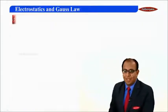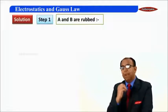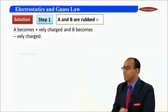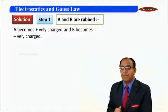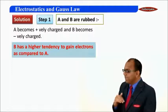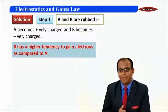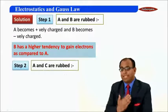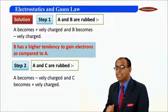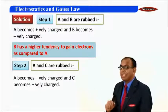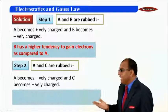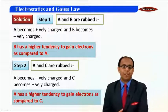From information one, when A and B are rubbed with each other, A acquires positive charge and B acquires negative charge. As a result, we can conclude that B has a higher tendency to gain electrons as compared to A. From the second information, when A and C are rubbed, A becomes negatively charged and C becomes positively charged. This helps us determine that out of A and C, A has a higher tendency to gain electrons as compared to C.